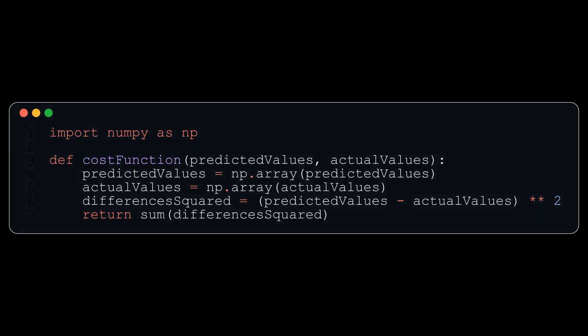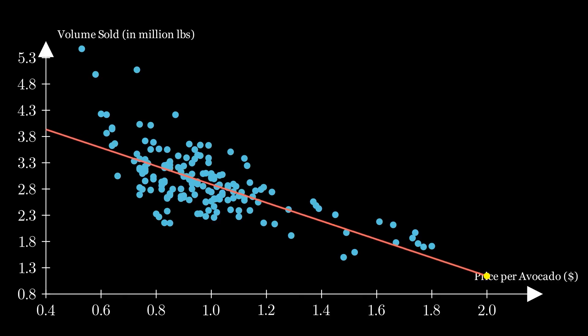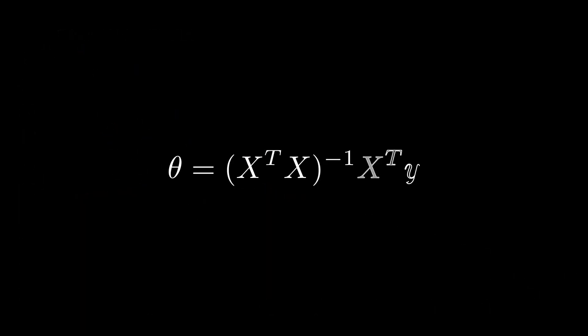Now we need to know how to find the weights for the functions. That way we can actually make the lines in order to compare them. In order to get the weights, we use what is called the normal function. It looks a bit scary, but I promise it's not so bad.